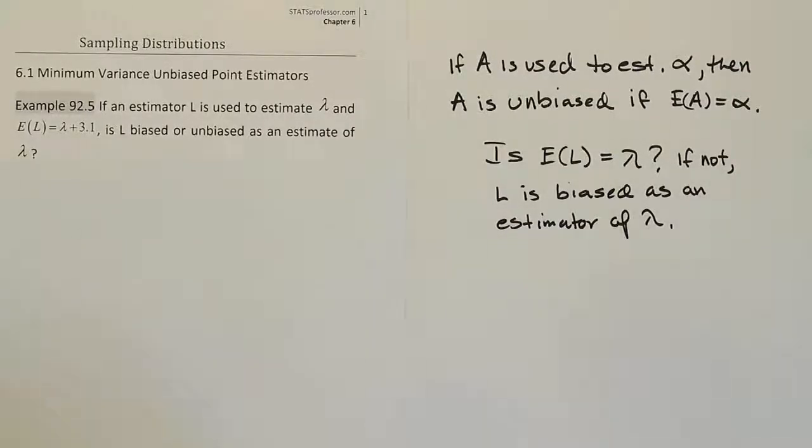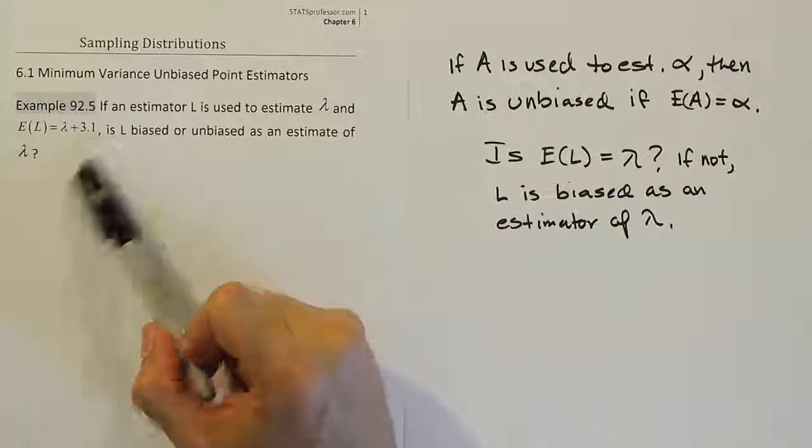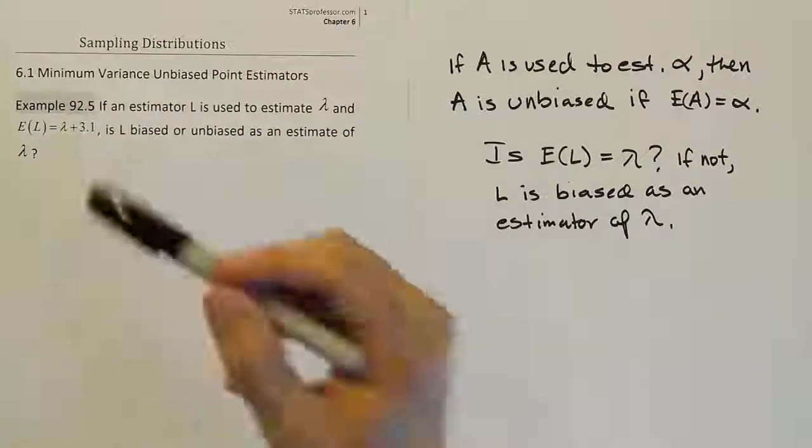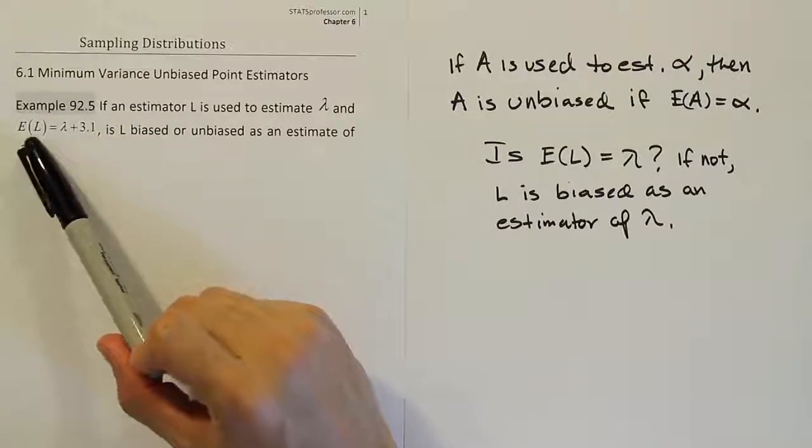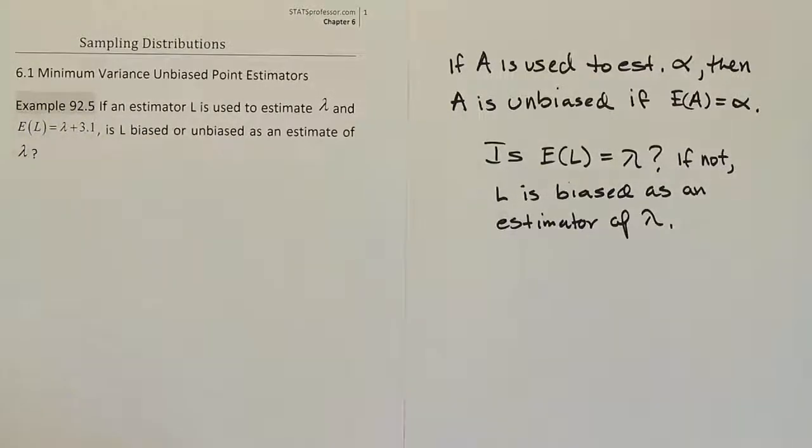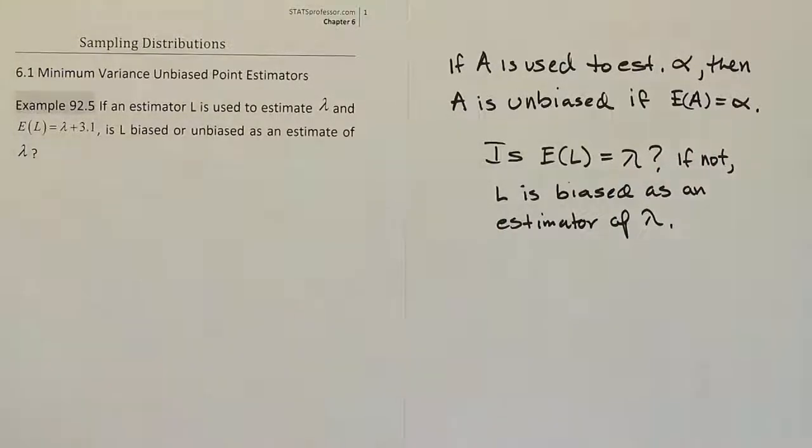Incidentally, that would imply that L minus 3.1 is actually an unbiased estimator of lambda. Because if you subtracted 3.1 from here, you would end up with just lambda. So the expected value of L minus 3.1 would actually be an unbiased estimate of lambda.